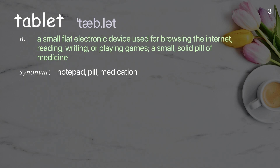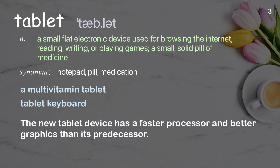Tablet — a small, flat electronic device used for browsing the internet, reading, writing, or playing games; also a small, solid pill of medicine. Examples: a multivitamin tablet, tablet keyboard. The new tablet device has a faster processor and better graphics than its predecessor.